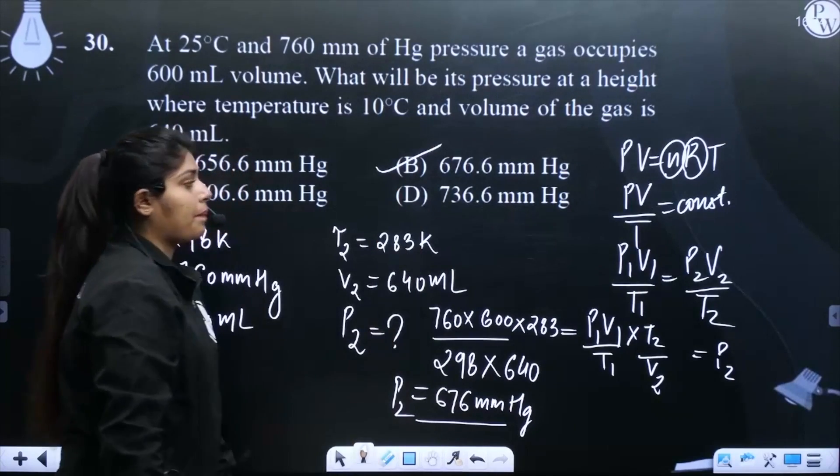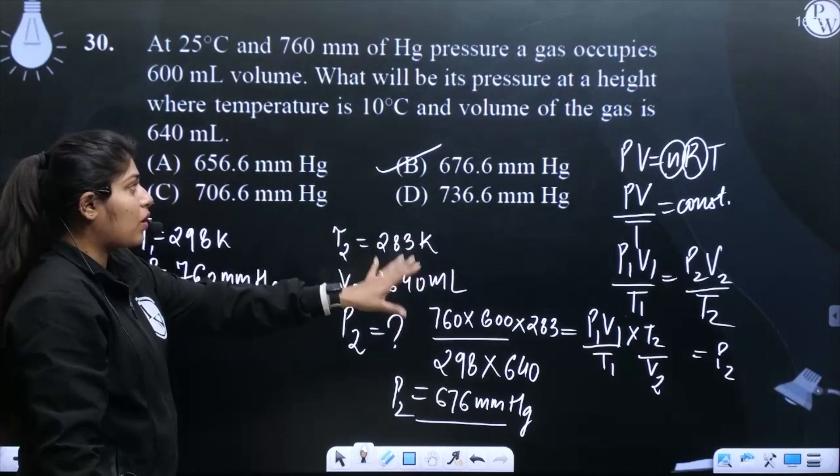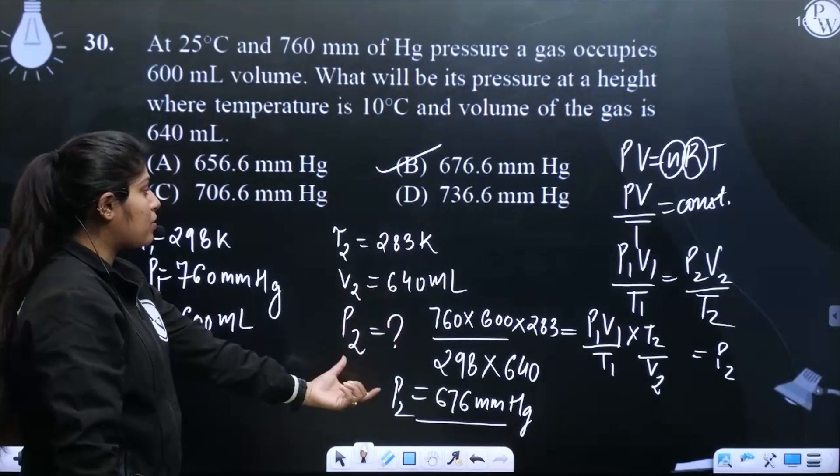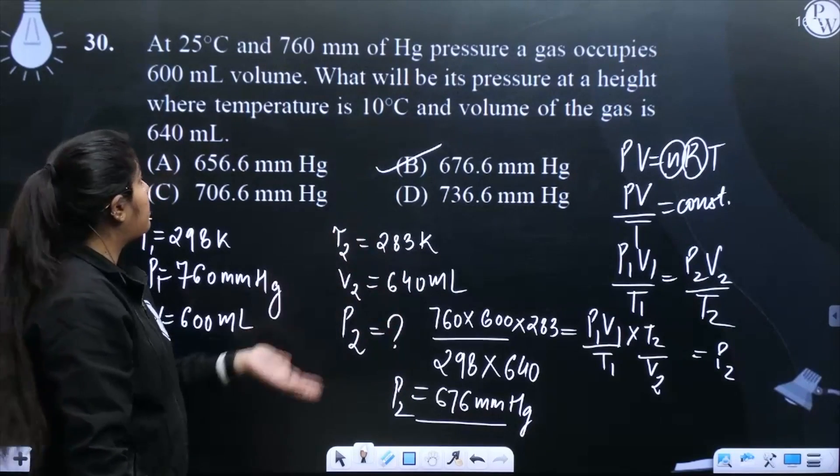Option number B. Alright, we used the normal ideal gas equation, put in the values accordingly and then just solved it. Option number B would be the correct answer.